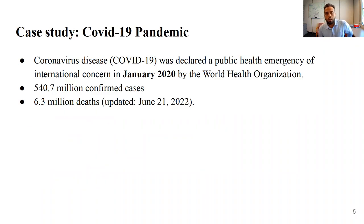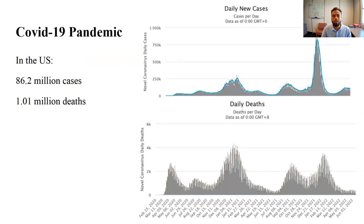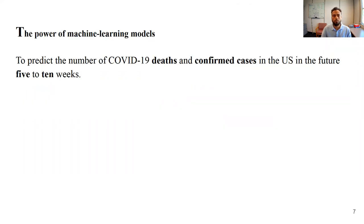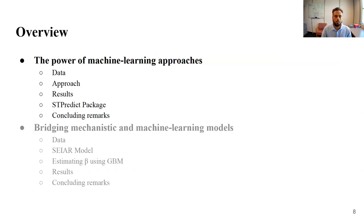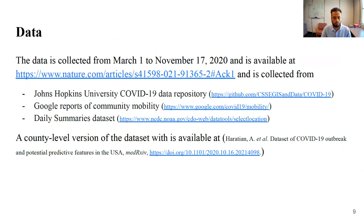I'll use COVID-19 as a case study. Up to today, we have around 540 million confirmed cases and 6.3 million deaths globally. I'll focus on the US: 1 million deaths, 86 million cases. These are the graphs of daily deaths and confirmed cases. The goal is to predict the number of COVID-19 deaths and confirmed cases in the US nationally for the future five to ten weeks — long-range predictions.